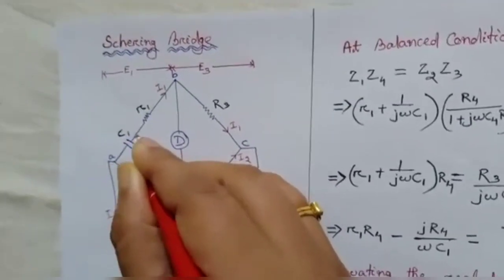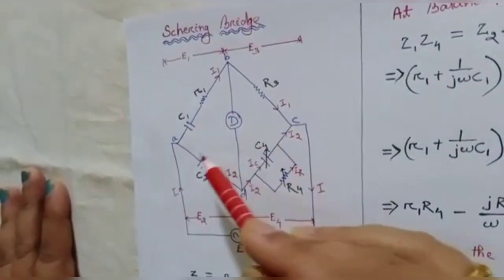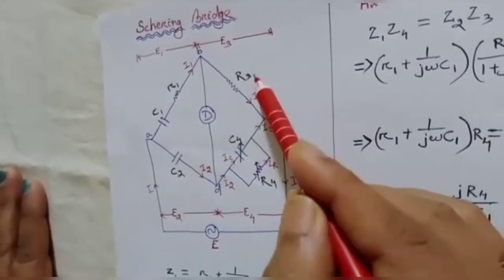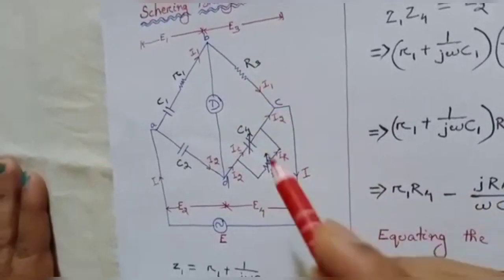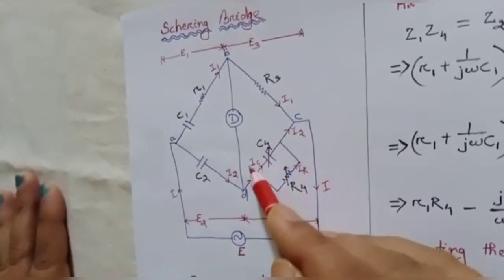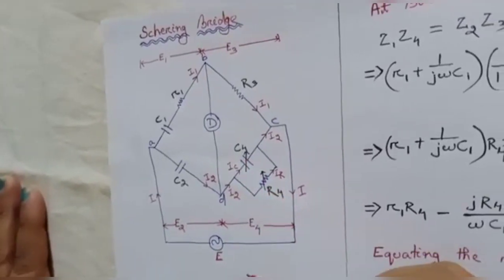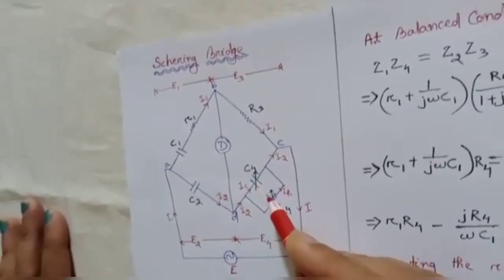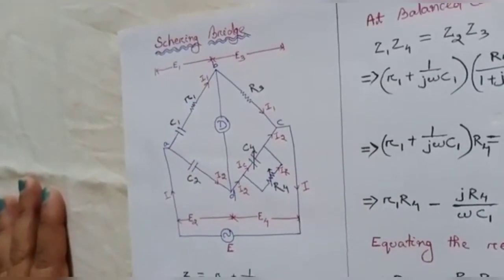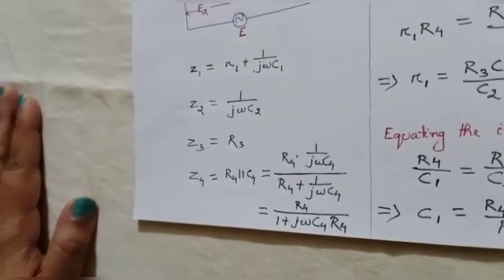R1 is the unknown resistance. In branch 2 we have a simple capacitor C2. In branch 3 there is a resistor R3. In branch 4 we have a parallel combination of a capacitor and a resistor — both are variable elements — and by varying these we can find out the unknown parameters of this circuit.